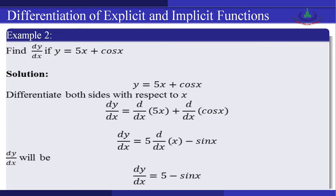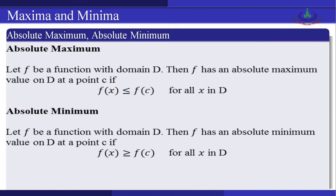Now we look at another example: find dy/dx if y = 5x + cos(x). Differentiating both sides with respect to x, we get dy/dx = d/dx(5x) + d/dx(cos x) = 5·d/dx(x) − sin(x). Therefore, dy/dx = 5 − sin(x).